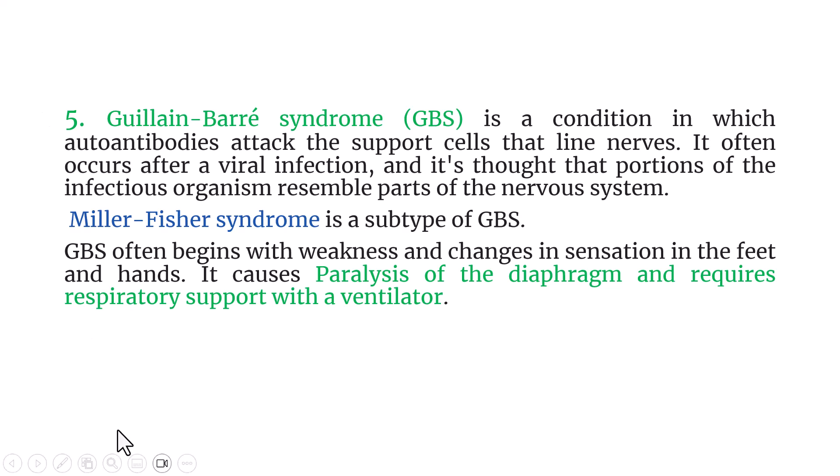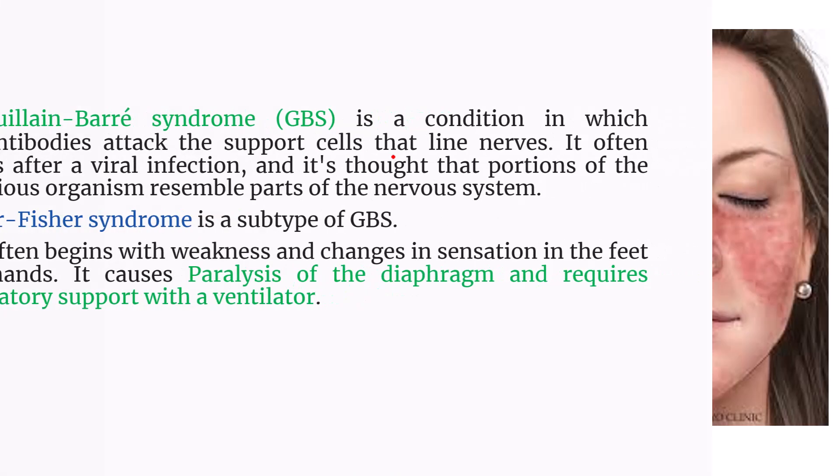Guillain-Barré syndrome, or GBS, is a condition in which autoantibodies attack the support cells that line nerve cells. It often occurs after a viral infection, and it is thought that a portion of the infectious organism resembles part of the nervous system. There is a subtype called Miller-Fisher syndrome. GBS often begins with weakness and changes in sensation in the limbs, and it can cause paralysis of the diaphragm, requiring respiratory support with a ventilator.